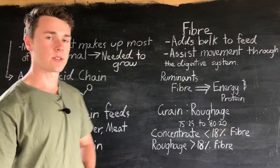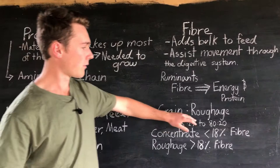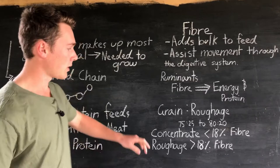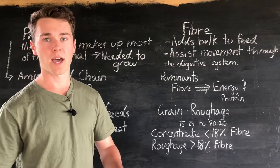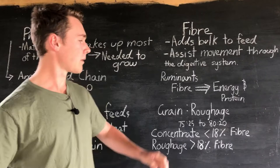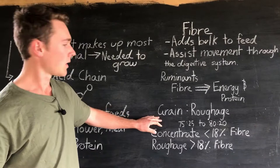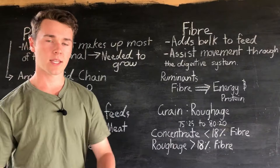In ruminant diets we refer to the grain-to-roughage ratio — how much grain there is in proportion to roughage. A good ratio is between 75:25 and 80:20, which provides enough energy and protein through the grain and enough roughage. Some feedlots push this up to 90:10 to increase protein, but the more grain you have, the greater the chance of grain poisoning, which can set your cattle back and end up costing you more money than staying in the safe zone.